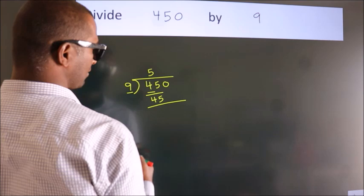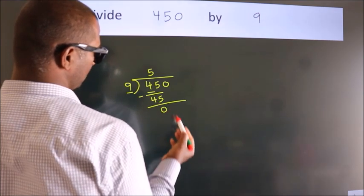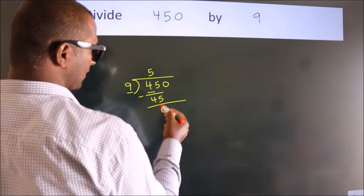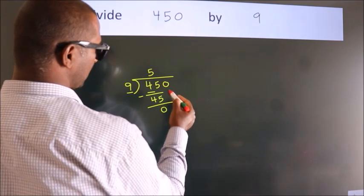Now, we should subtract. We get 0. After this, bring down the beside number.